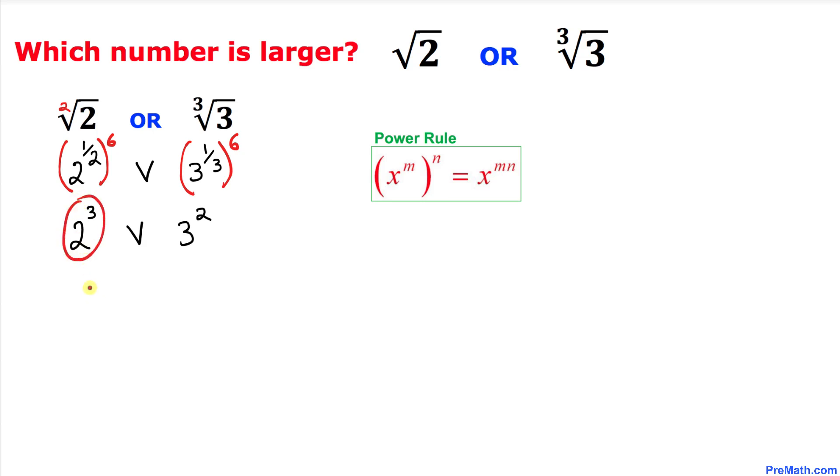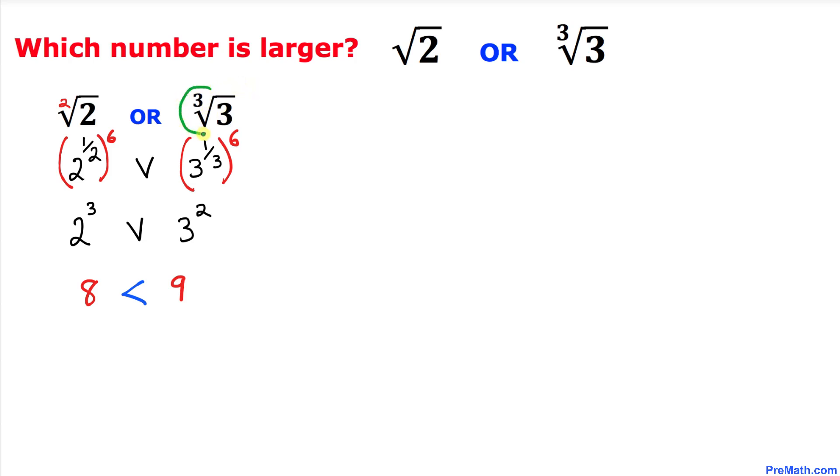power 3 could be written as 8, and on this side, 3 power 2 could be written as 9. We know that 9 is always bigger than 8. So therefore, we conclude that cube root of 3 is a